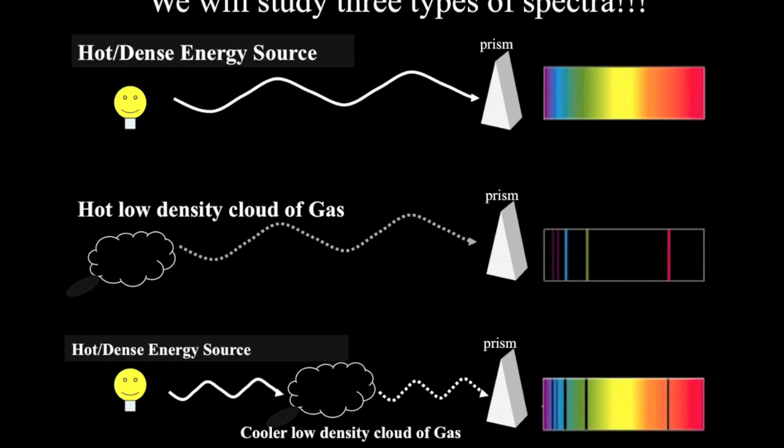In astronomy class, we're going to talk about three different types of spectra that can be produced when light interacts with matter. There are continuous spectra, which look like a rainbow spectrum where all the colors blend together.